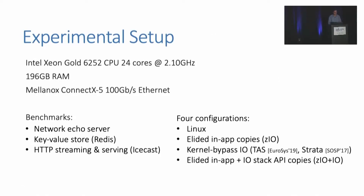Our experimental setup uses an Intel Xeon Gold with 196 gigabytes of RAM and a 100 gigabit Ethernet interface. The benchmarks presented are a network echo server, a key-value store in Redis, and an HTTP streaming and serving application in IceCast. We run these in four configurations: Linux by default; Zeo, which elides in-application copies; kernel bypass I/O stacks using TAS and Strata (TAS for the network, Strata for storage); and Zeo with full I/O stack integration that elides both in-application copies and I/O stack API copies.